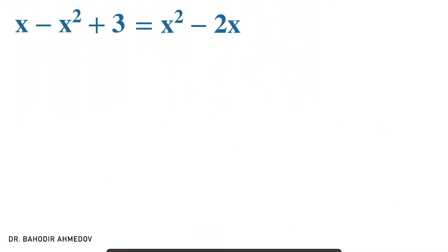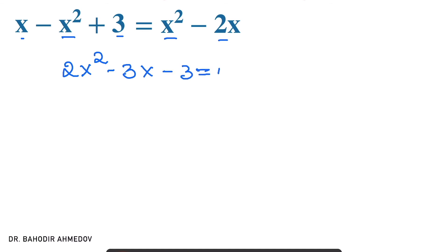Now we just need to equalize those determinants and find the values of x which satisfy this equation. Putting all x squared terms on one side gives 2x squared. Moving the x term to the right gives minus 3x, and moving the 3 to the right gives minus 3. This equals zero. In order to find the roots of this equation, we are going to find the discriminant.